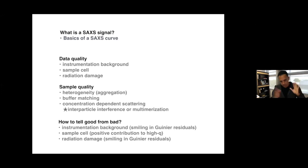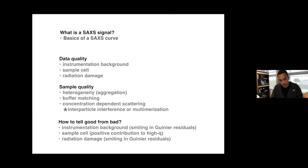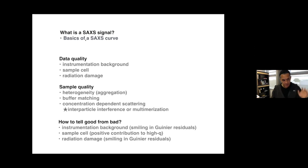When you manually process the data, depending on the beamline you're at, most of the time you'll get subtracted datasets. In some cases you may need to subtract it yourself, or if you're processing size exclusion chromatography data, that processing is a subtraction process. Just to make sure we're on the same page, here's what we're going to cover.